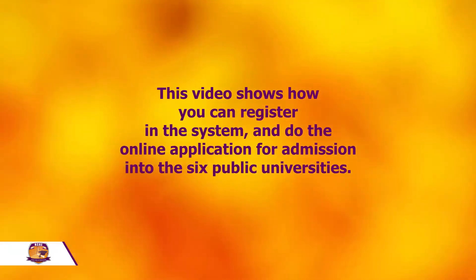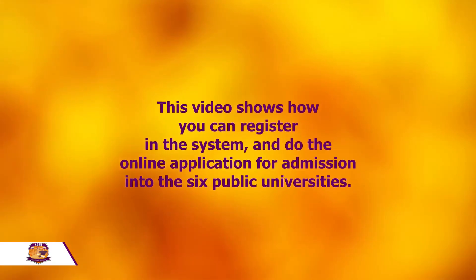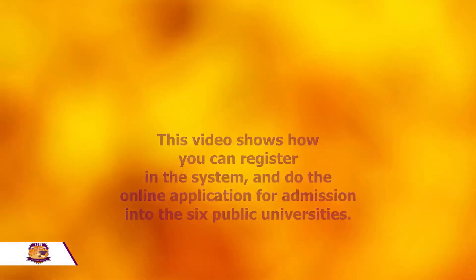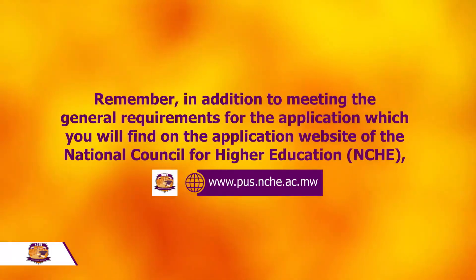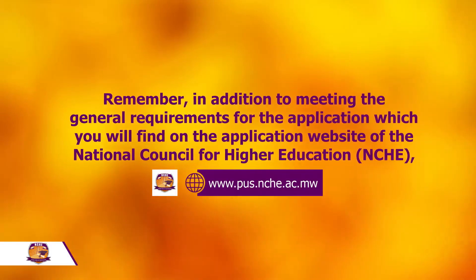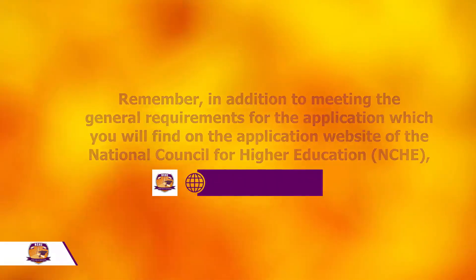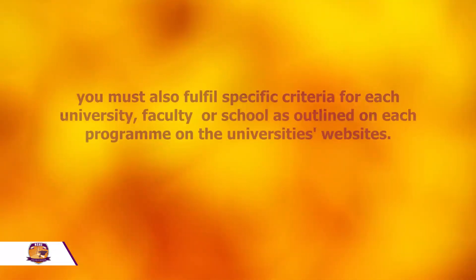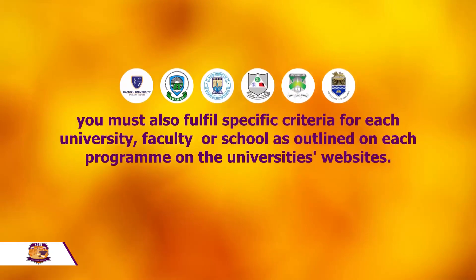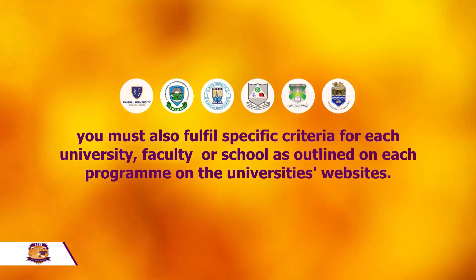This video shows how you can register in the system and do the online application for admission into the six public universities. Remember, in addition to meeting the general requirements for the application, which you will find on the application website of the National Council for Higher Education, CHE, you must also fulfill criteria for each university, faculty, or school as outlined on each program on the university's websites.